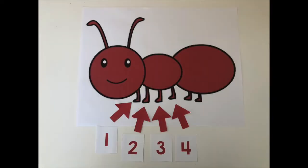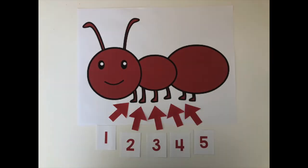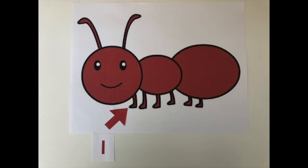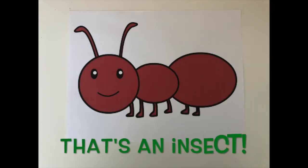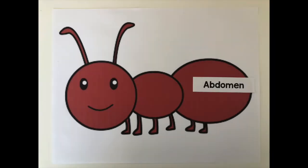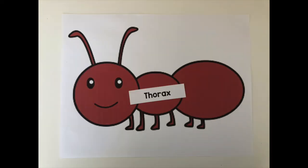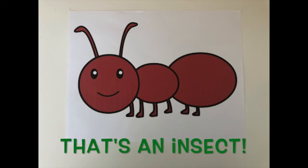Every insect has six legs, has six legs, has six legs. Every insect has six legs, that's an insect. Head and thorax, abdomen, that's an insect.